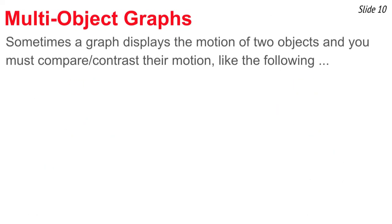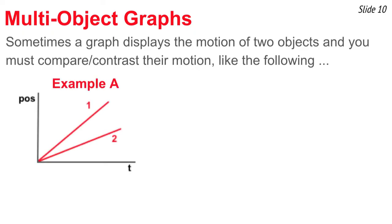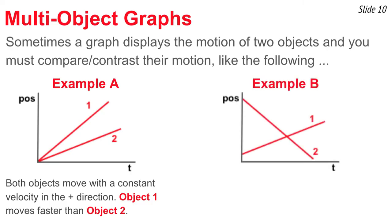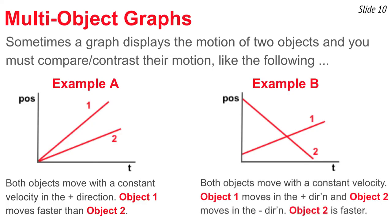Sometimes a graph displays the motion of two objects, and you have to compare and contrast them. In the first example, objects one and two are both straight diagonal lines moving in the positive direction with constant velocity, but object one is steeper — so object one is moving faster than object two. In a second example, object one slopes positively and object two slopes negatively, so they move in opposite directions. Since line two is steeper, object two is faster than object one.